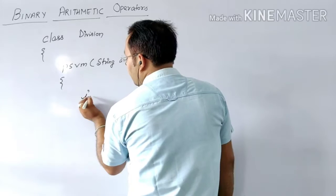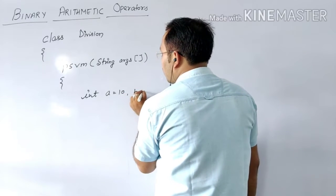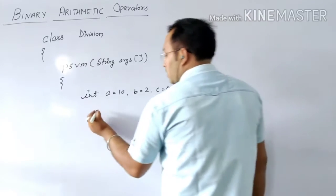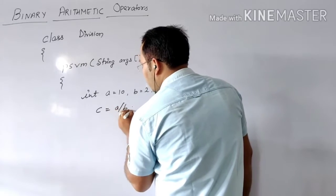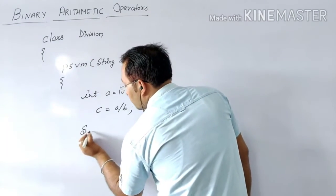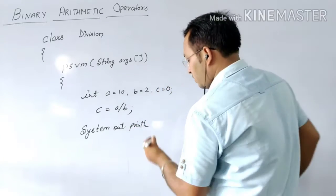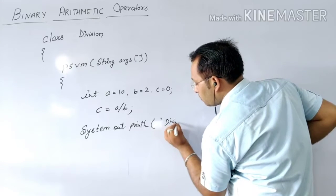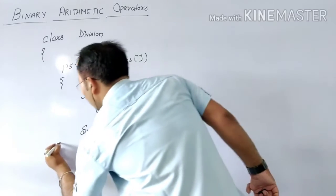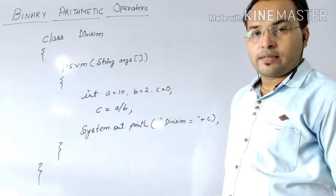Next, here I have taken one data type int, and int A equals to 10, comma, B equals to 2, and there you can use C, in which nothing is stored, that means 0. Now, C equals to A upon B, that means A is going to be divided by B. Then after that, system dot out dot println, and you can write division is equals to plus C. This is your result, and you can see that whatever operation you have performed, you will get the result of that over here.